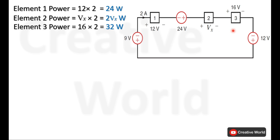Now moving towards the sources in this network, we have three sources. For our understanding we will label these as voltage source 1, voltage source 2, and voltage source 3.